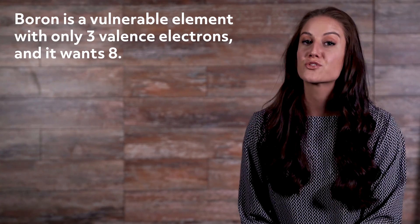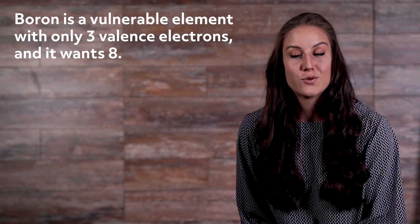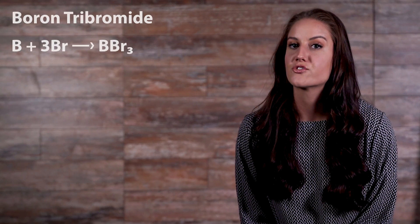How are boric acid and borax formed? Both are a boron compound. However, boron will never occur naturally in just elemental form — it will always be bonded with another element. The reason this is the case is because boron is a vulnerable element with only three valence electrons, and it wants eight, so it's going to bond with another element that is looking to acquire some electrons. In this case, we're going to say that it bonds with bromine, and the product is going to be boron-tribromide.